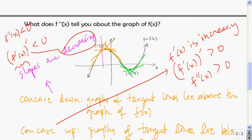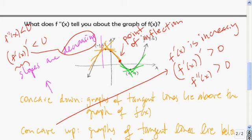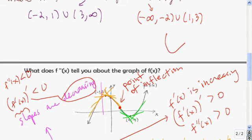This point here where the concavity changed from concave down to concave up is called an inflection point, or a point of inflection. The point of inflection is where we change concavity — either going from concave down to concave up, or from concave up to concave down. That also tells us where f prime changes from increasing to decreasing, or vice versa.